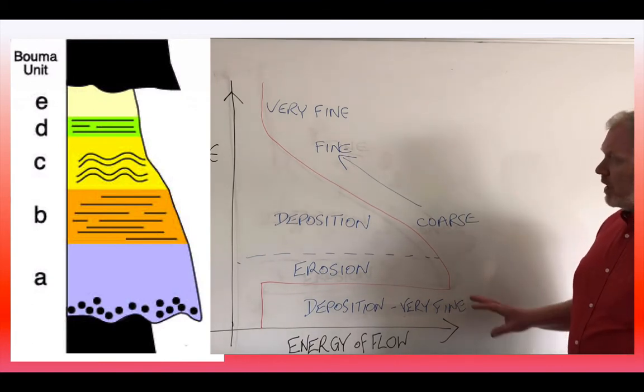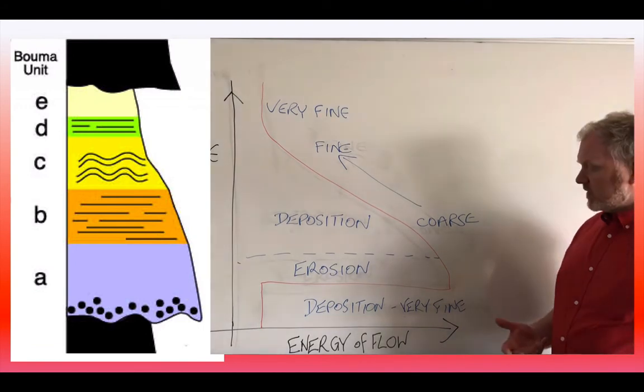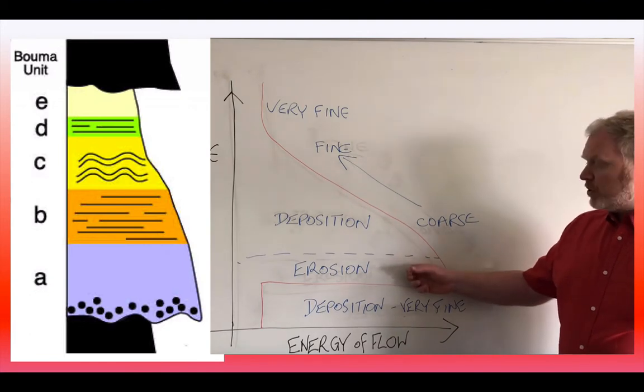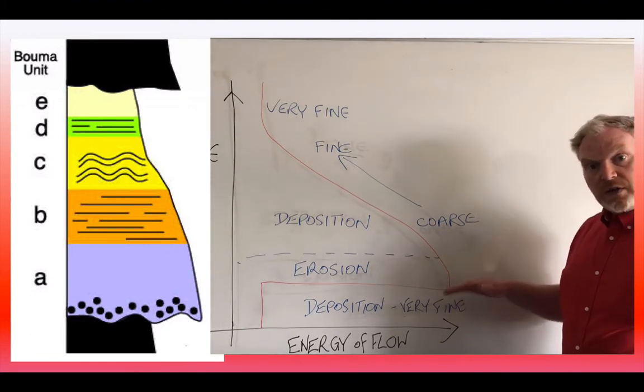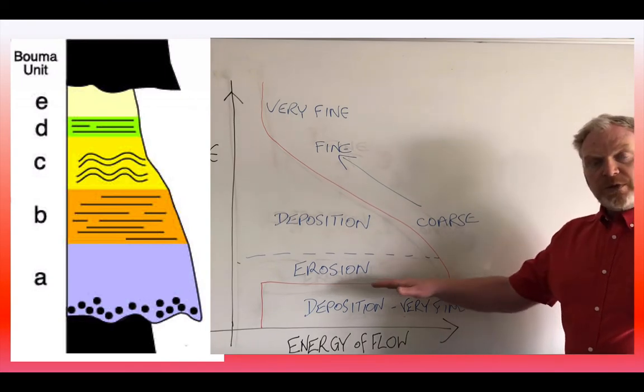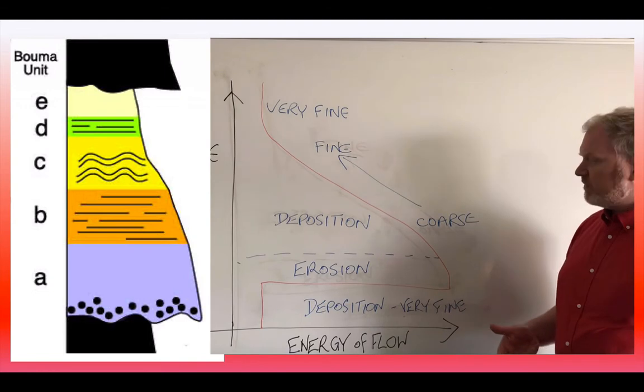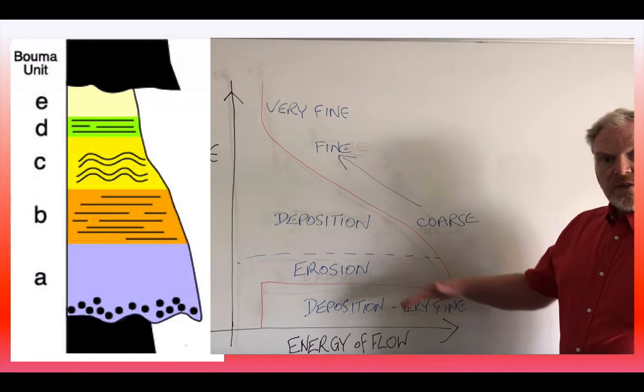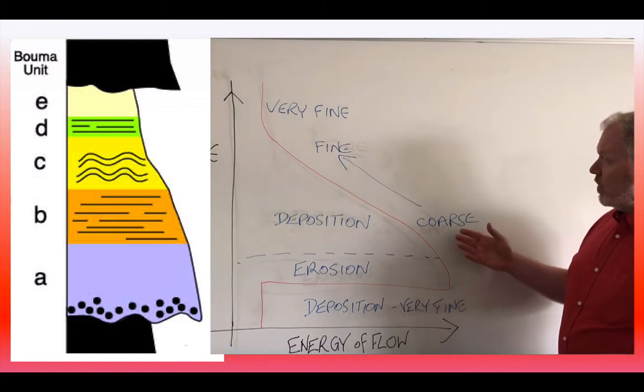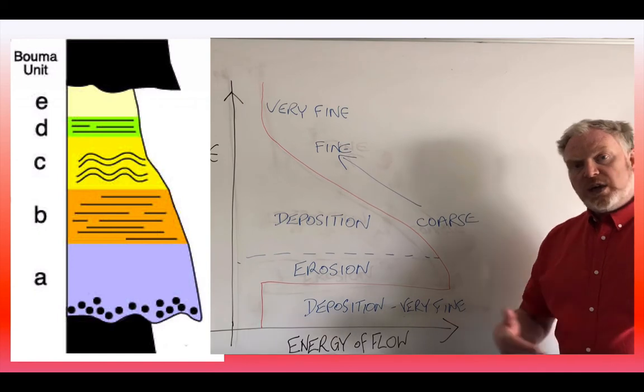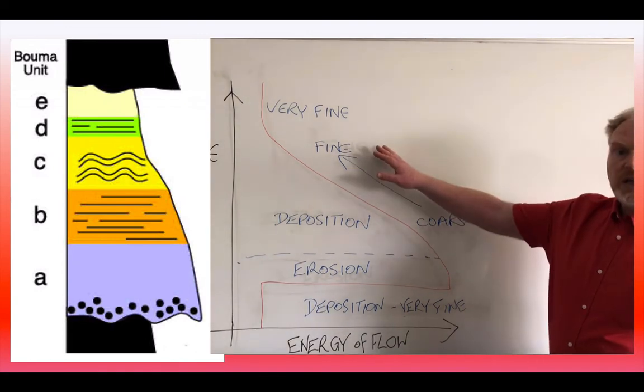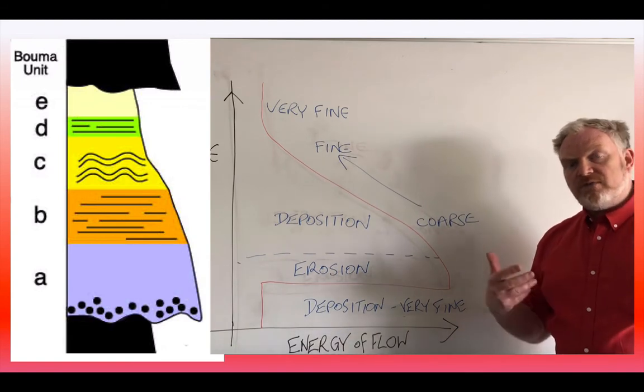So this energy profile shows us how a Bouma sequence gets deposited. At the base of the sequence, this period of erosion gives our erosive surface at the base of the Bouma sequence, possibly with flute casts, groove casts and other erosive features. The deposition then that will occur as the velocity of the flow decreases changes in grain size. So we get the very distinctive graded bed within a typical Bouma sequence. Until eventually, we end up back where we started with the very fine-grained material.